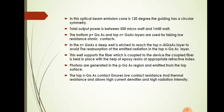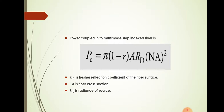Photons are generated in the p-gallium arsenide region and emitted from the top surface. The top n-gallium arsenide contact ensures low contact resistance and thermal resistance and allows high current densities and high radiation intensity. The power coupled into a multimode step-index fiber in the case of surface emitting LEDs is: Pc equals pi times (1 minus R) times A times Rd times NA squared, where R is the Fresnel reflection coefficient at the fiber structure, A is the fiber cross-section, and Rd is the radiance of the source.